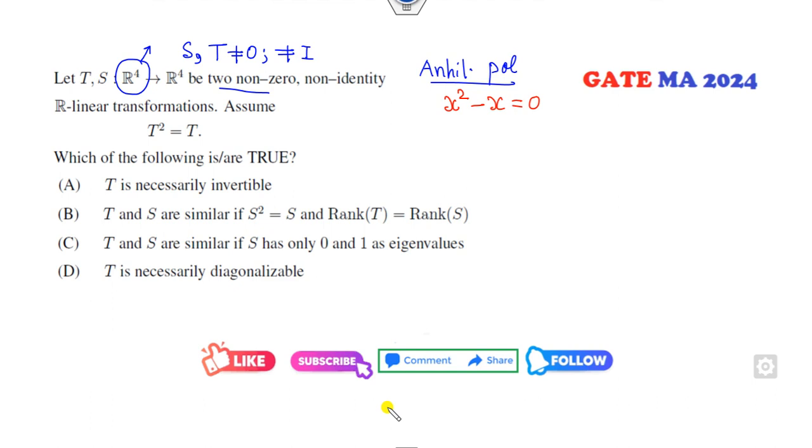If the annihilating polynomial is X squared minus X equals 0, how can you identify the characteristic polynomial or check whether it's invertible, diagonal, or similar? We know the minimal polynomial will divide this annihilating polynomial. I can factorize this as X times X minus 1 equals 0.